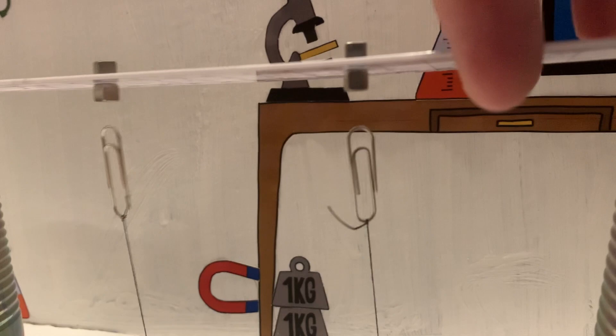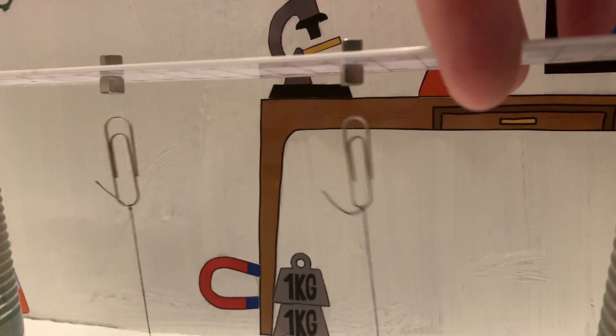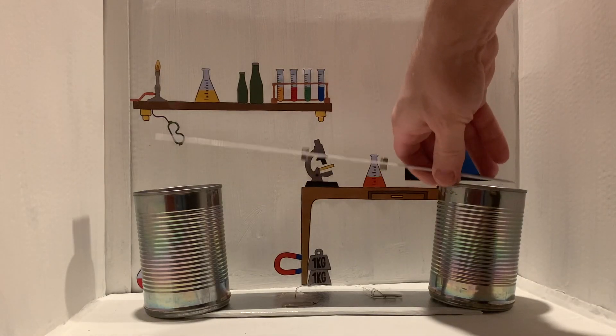Remove the ruler and the paper clips will fall back down to the ground. And that's science in 60 seconds. Cheers.